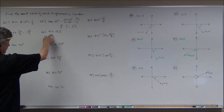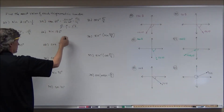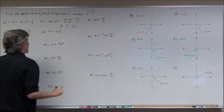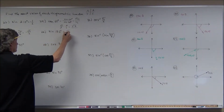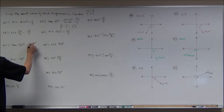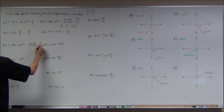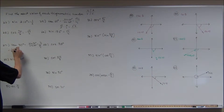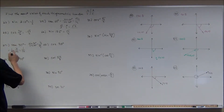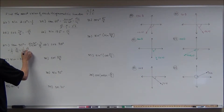I have that memorized. The sine of 135 degrees is in the second quadrant — sine is positive. All students take calculus: sine is positive in the second quadrant, so it's positive square root of 2 over 2.